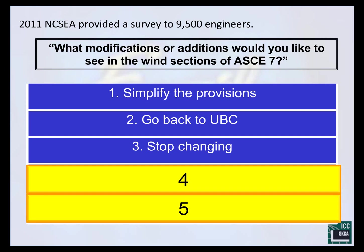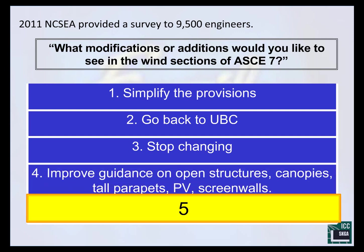The third request was to stop changing. This is something that does sit in the back of the heads of the code writers — only making changes when they're meaningful and necessary. The fourth request is where we're really going to spend our two hours today. There was an overwhelming request in 2011 by practicing engineers to help with guidance on things like open structures, canopies, tall parapets, solar PV, and screen walls — these represent those non-building structures. We may understand fairly well how to do wind design on a building, but where we're struggling is with these non-building structures. That's the intent of this session.